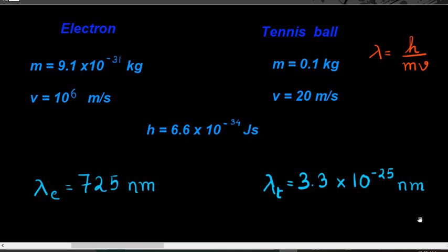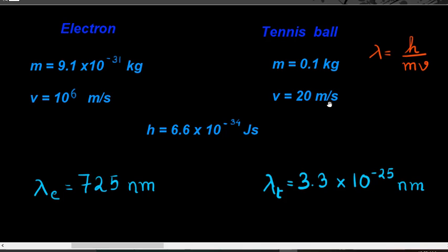Let us now see the consequences of the De Broglie concept. We take an electron, which is a micro particle, and a tennis ball, which is a macro particle. The mass of an electron is 9.1 × 10⁻³¹ kg with velocity 10⁶ m/s. For the tennis ball, the mass is 0.1 kg and the velocity is 20 m/s.